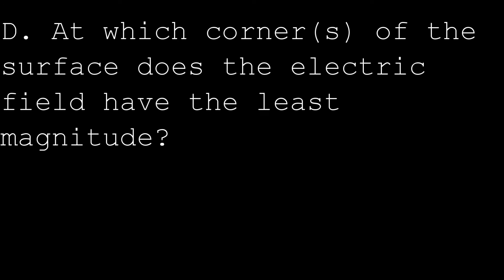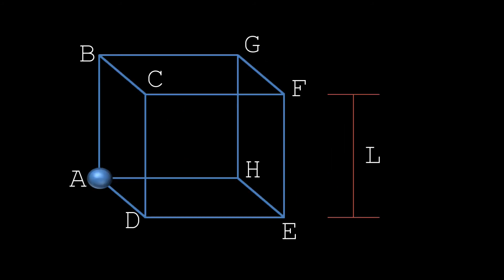Part D asks at which corner or corners does the electric field have the least magnitude? We were told this is a conducting sphere. For all conducting spheres, the charge is located on the surface and there is no charge inside. Vertex A is within the sphere itself, meaning there is no charge there. All other vertices B, C, D, E, F, G, H will have some flux passing through them. Therefore the answer is corner A, because there is no charge within a conducting sphere.